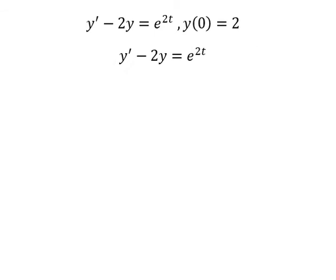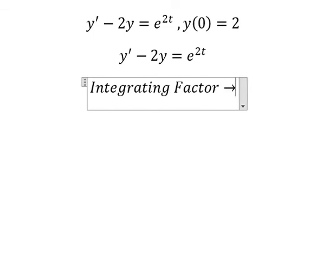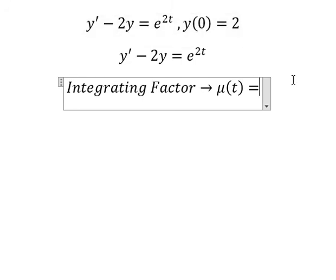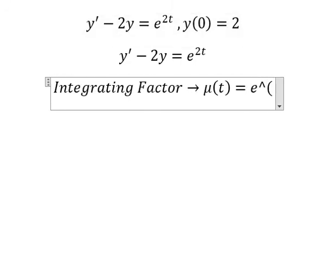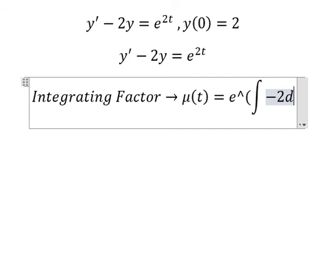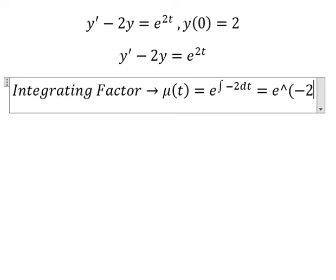We can use the integrating factor, so we need to find μ(t) equals to e to the power of the integral. We see that negative 2 next to y, this is for integrating factor, and I will put this one here. We have e to the power of negative 2.